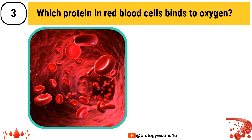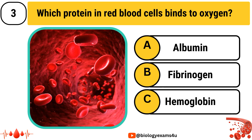Next question: Which protein in red blood cells binds to oxygen? The options are Option A: Albumin, Option B: Fibrinogen, Option C: Hemoglobin.